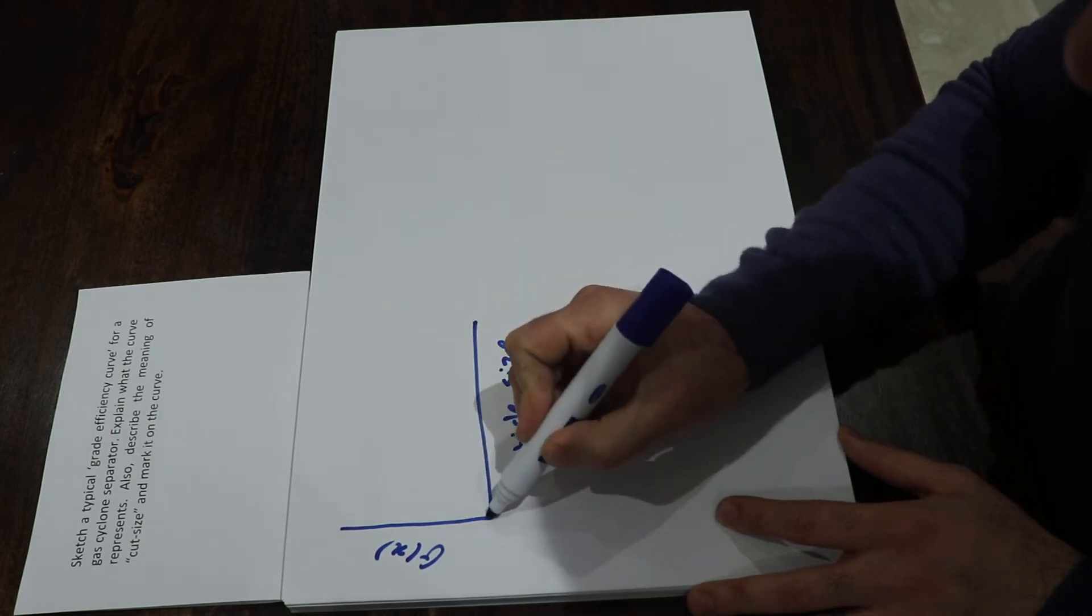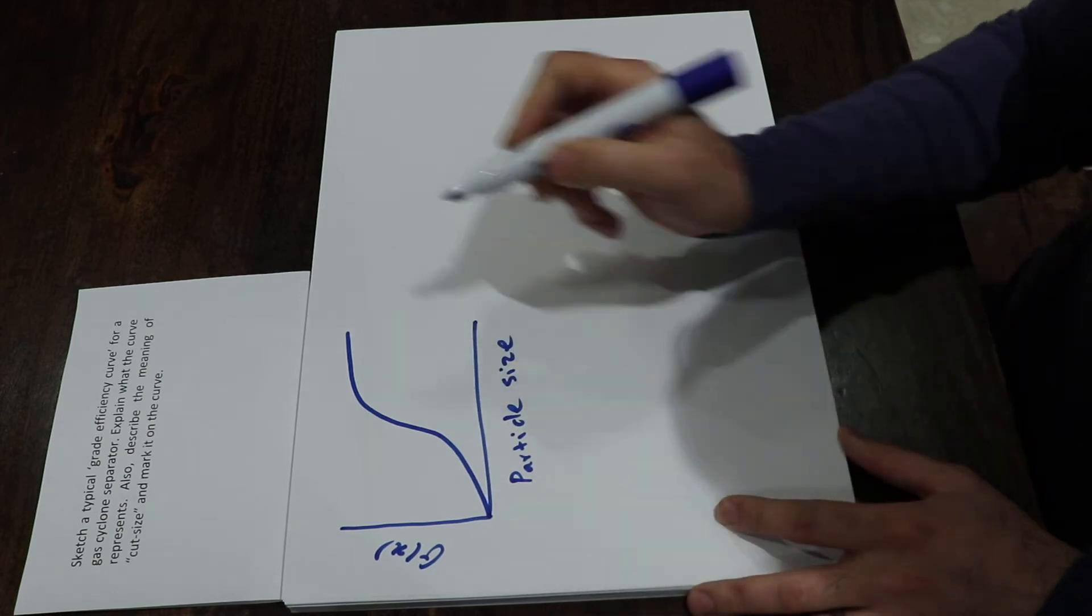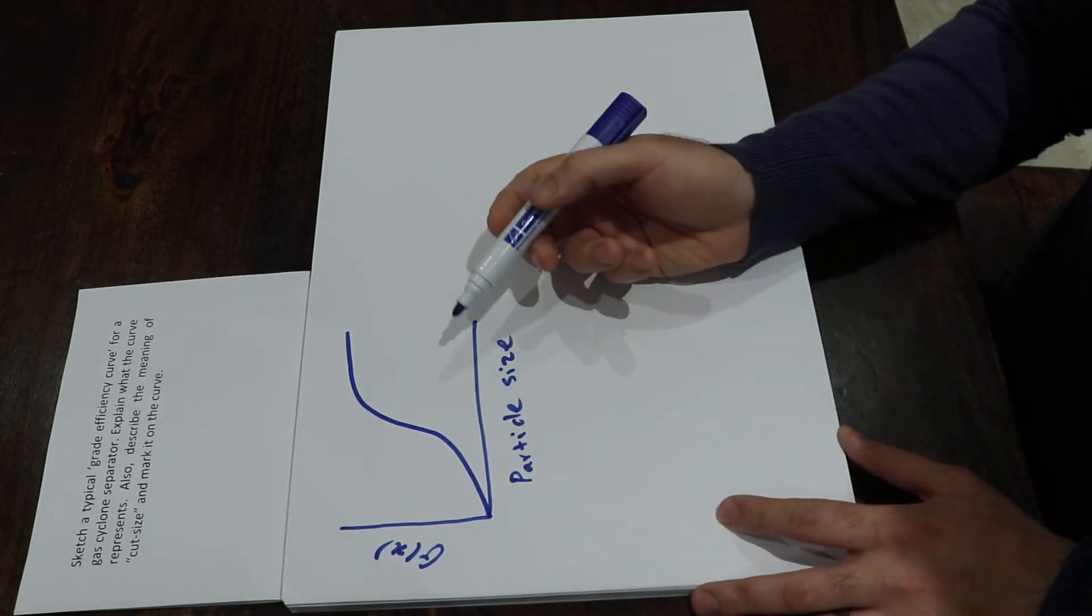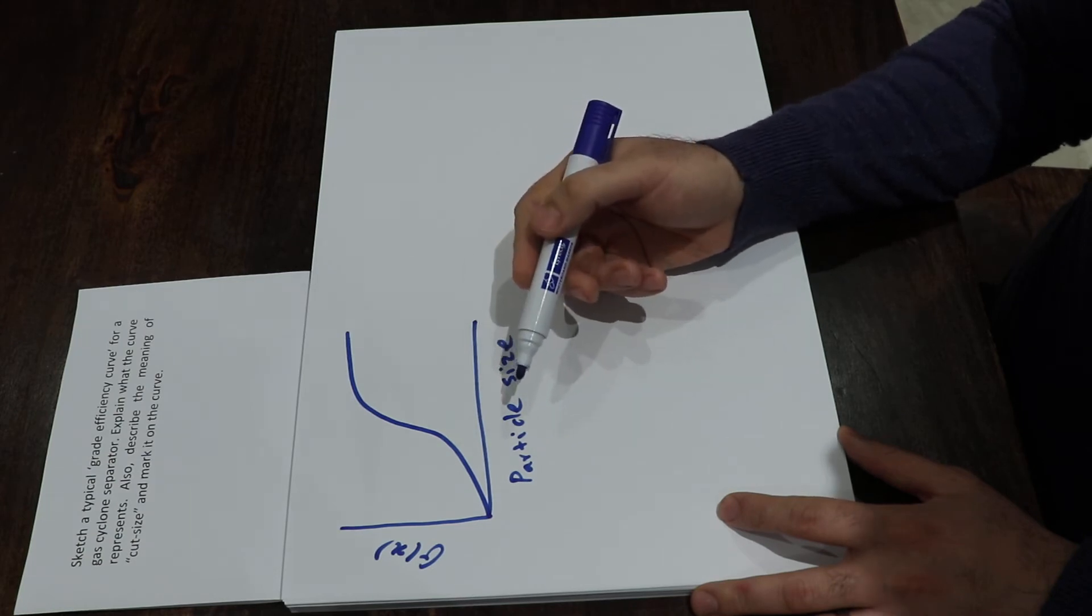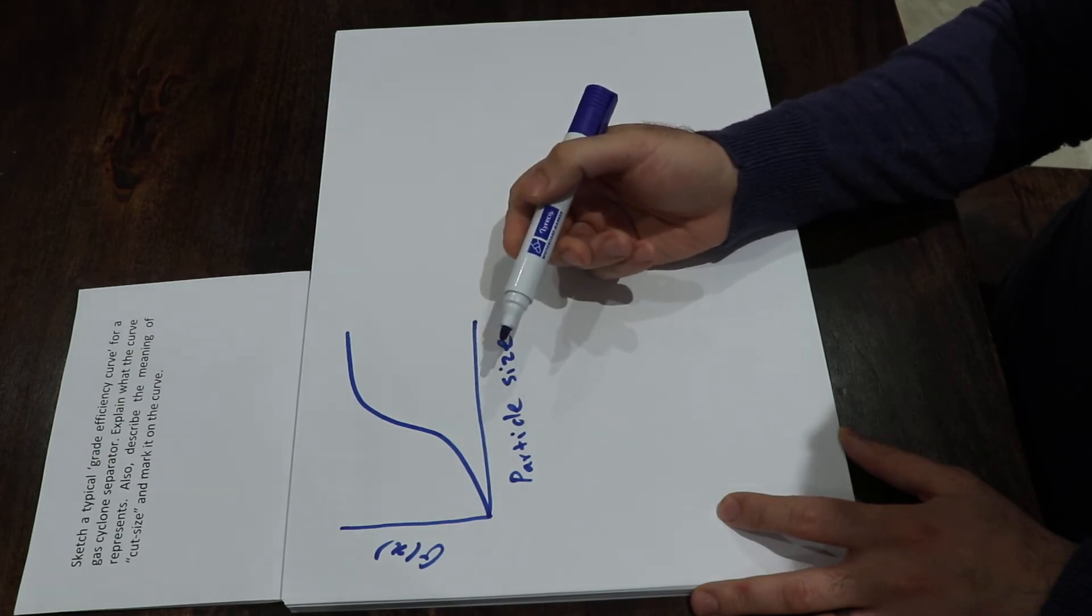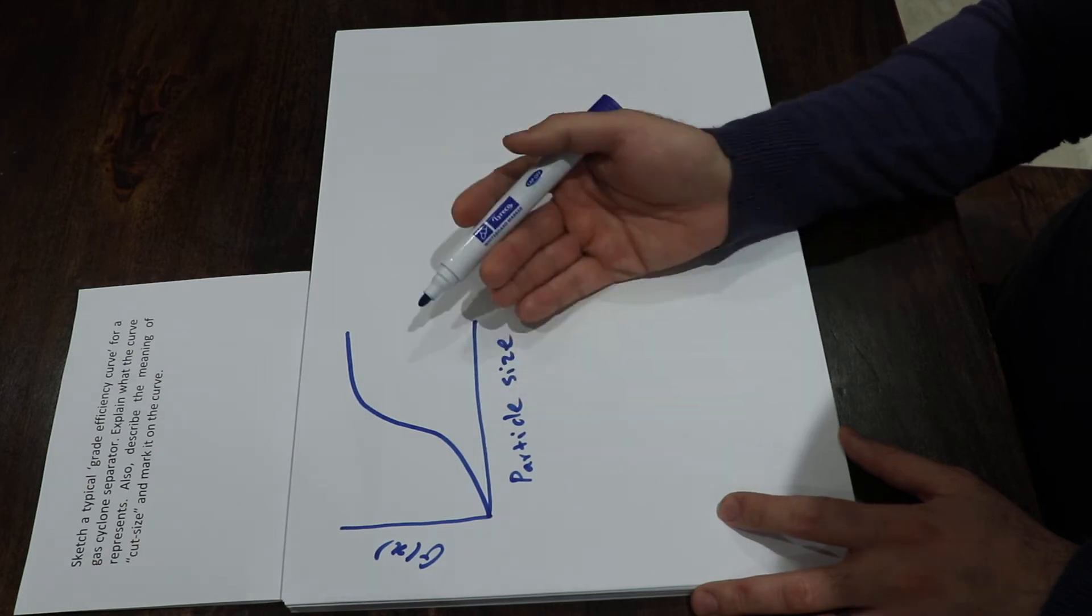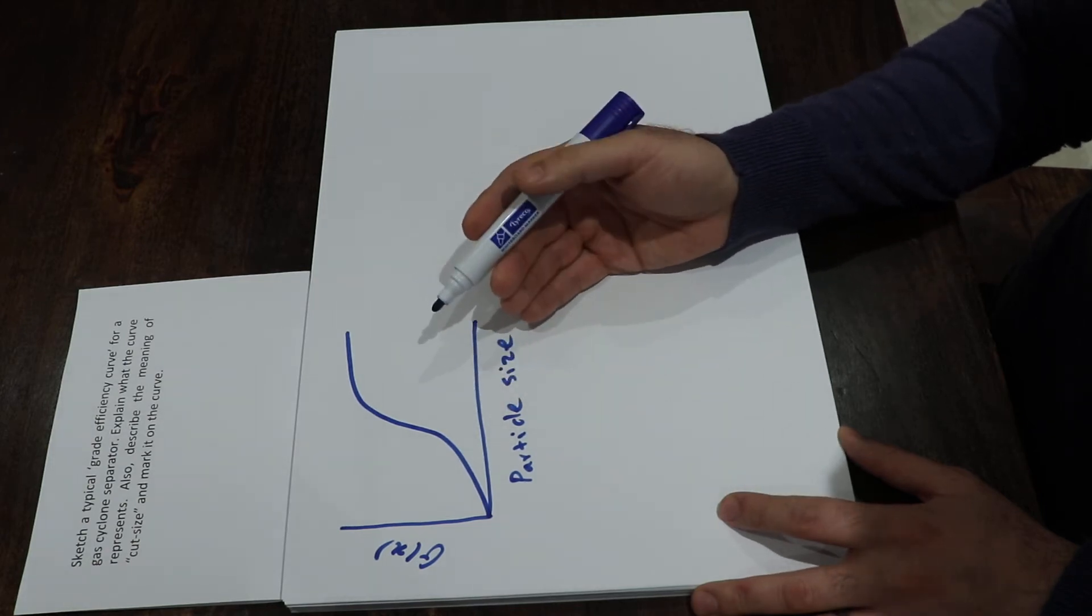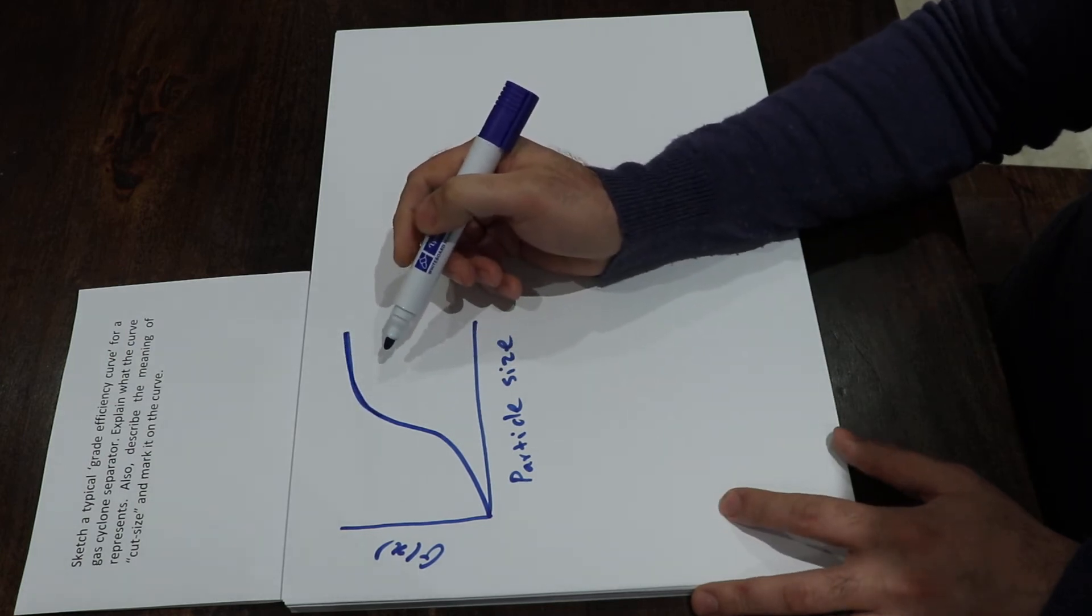the grade efficiency curve is S-shaped because in practice, gas velocity fluctuations and particle-particle interactions result in some particles larger than the critical particle size being lost, and some particles smaller than